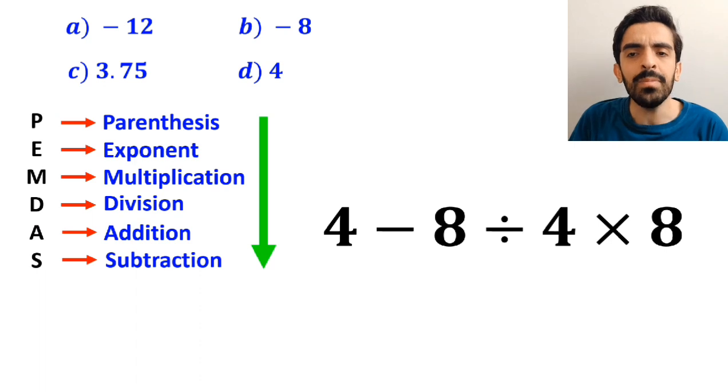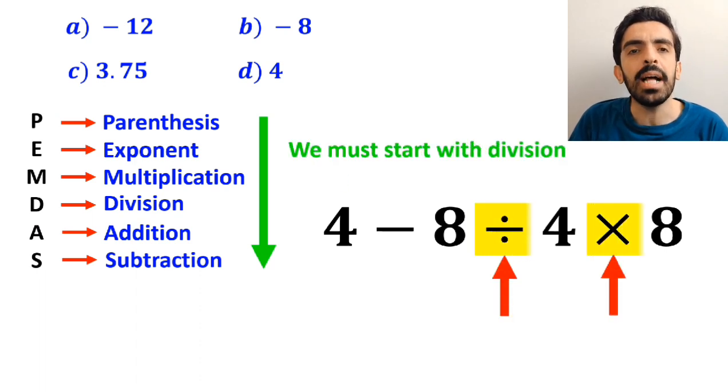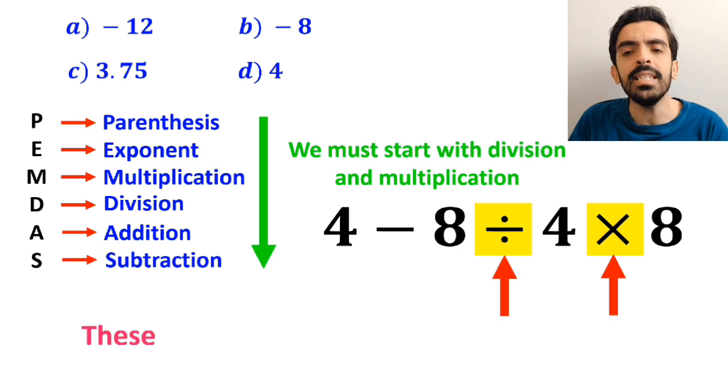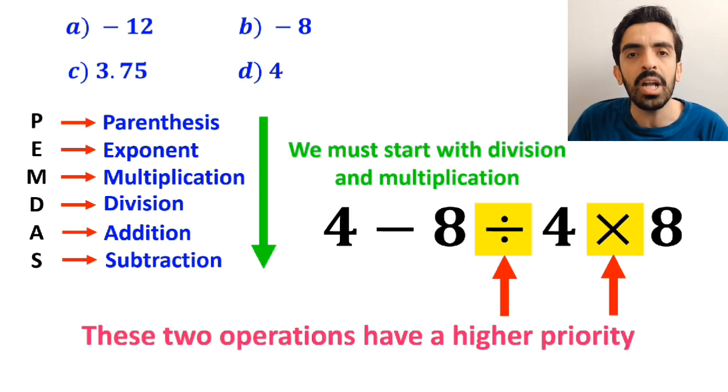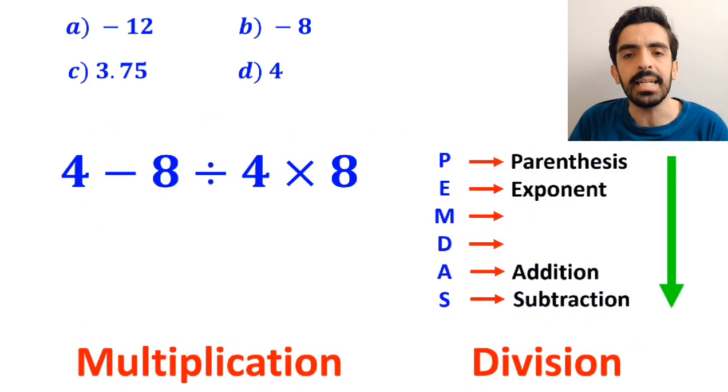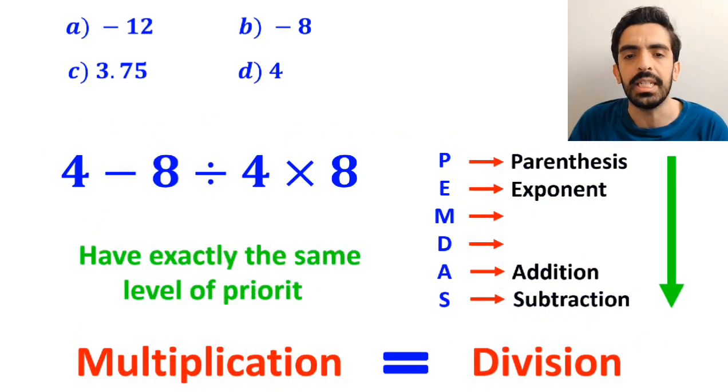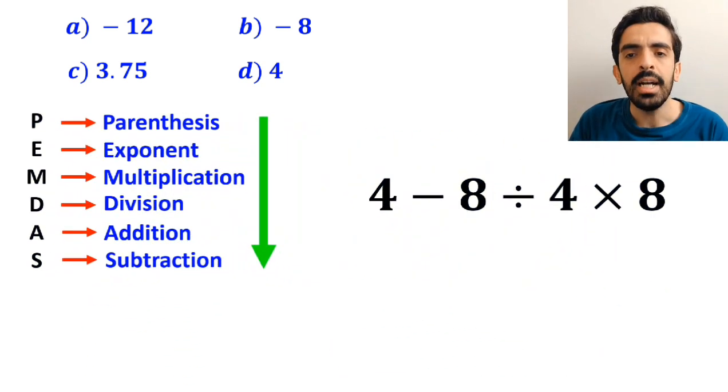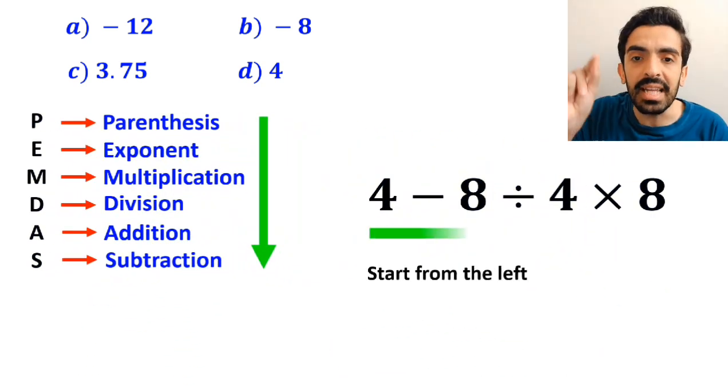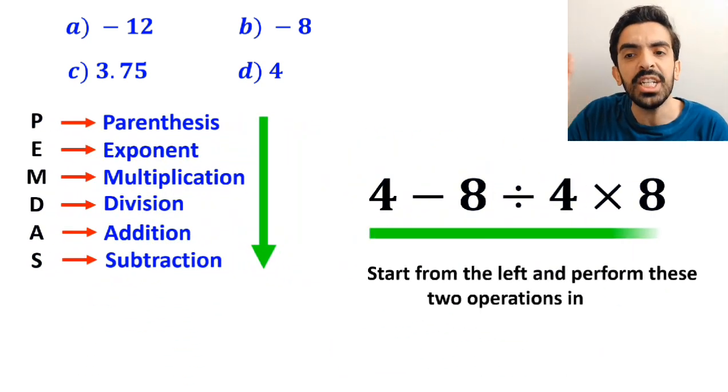Okay, according to the PEMDAS rule, we must start with the division and multiplication because these two operations have a higher priority than subtraction. However, it's very important to keep in mind that multiplication and division have exactly the same level of priority. In this situation, the best approach is to start from the left and perform these two operations in order.